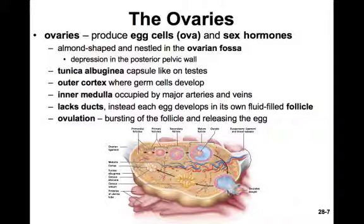The ovaries produce eggs, or ova, and sex hormones. They're almond-shaped and nestled in the ovarian fossa, a small depression in the posterior pelvic wall that fits the ovary perfectly. Just like in the testes, the tunica albuginea is the capsule that surrounds the ovaries. The ovary has an outer cortex and an inner medulla. The outer cortex is where we see all the various stages of egg development, while the inner medulla is primarily occupied by the major arteries and veins of the ovaries.